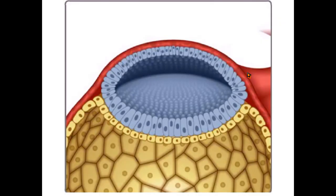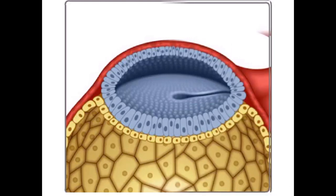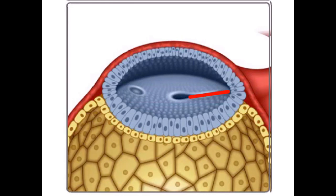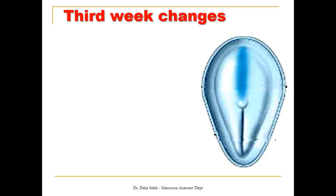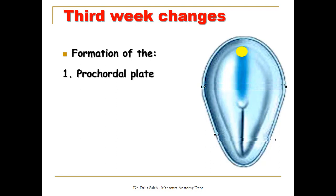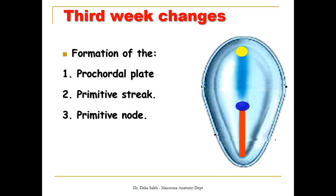If we look at the epiblastic layer, we can see at the caudal end of the embryo there is a line called the primitive streak that ends at a node called the primitive node. At the very cranial end of the embryo, there is a plate called the procordal plate. Imagine this is the embryonic disc — we cut the amniotic cavity and are looking at the embryonic disc from above. At first it looks oval in shape, and then with further development it widens at its cranial end and becomes narrow at its caudal end to form a pear-shaped structure. We can notice the procordal plate at the cranial end, the primitive streak at the caudal half, and a primitive node just cranial to the primitive streak.